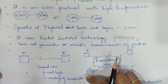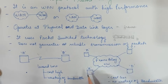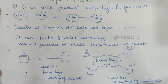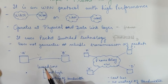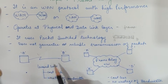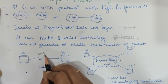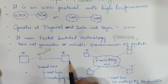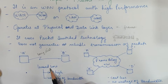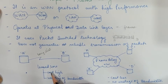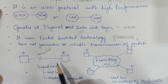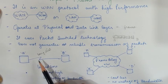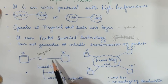To understand exactly what frame relay does, let's first look at leased lines and how they work. Leased lines are a great way to communicate over long distances — for example, connecting city A to city B. We can use a leased line with dedicated bandwidth allocated for the communication.